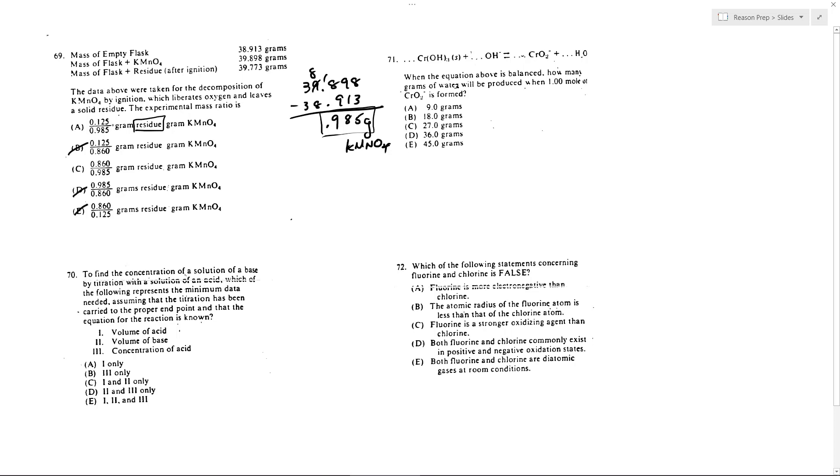And so now on the top, I need the mass of the residue left over. So now I'm going to do my 39.773. And from that, I'm going to subtract again, 38.913 to see how much of my residue is left after I've burned off the oxygen. So I'll get 0.860. So my fraction would be 0.860 over 0.985. And that's C. Again, I wouldn't worry about this question. I don't think you'll see it on more modern tests.